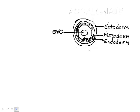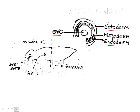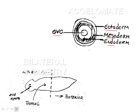Here's a visual of what we mean by acoelomate: we have the central gastrovascular cavity, the ectoderm, mesoderm, and endoderm, with no interstitial space in between — no division like we'll see in some other organisms. Bilateral symmetry is also shown here, and we have structures called eye spots, which we'll get into.